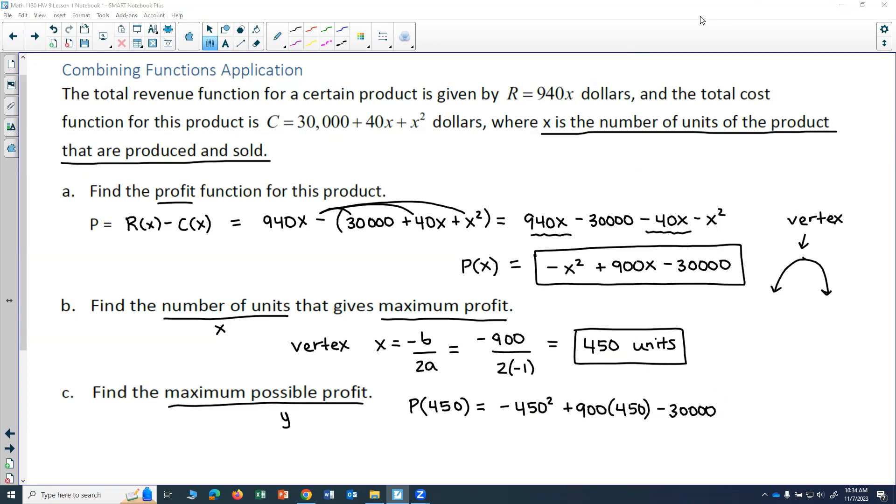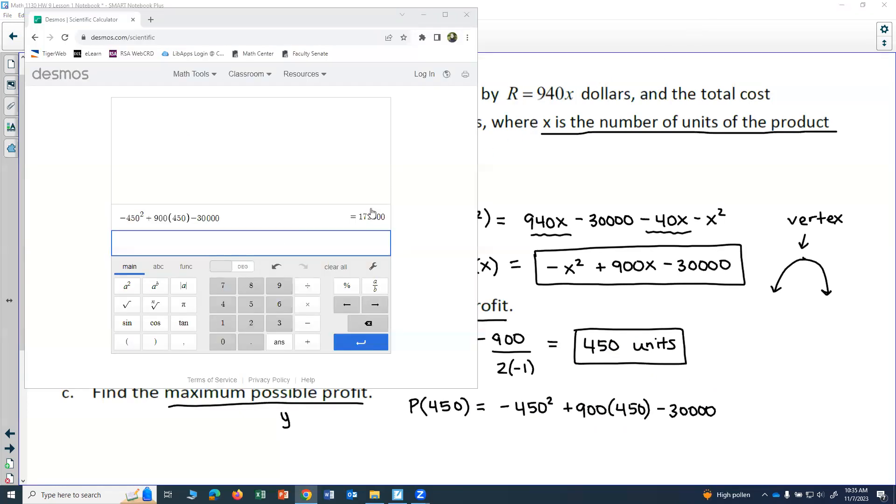So I'll go ahead and put that in the calculator. So I put that in my Desmos scientific calculator. -(450)² + 900(450) - 30,000. And notice the negative was out in front of the squared term. It was not being squared. And so that negative, you want to make sure that's outside of your squared term. So we get $172,500.